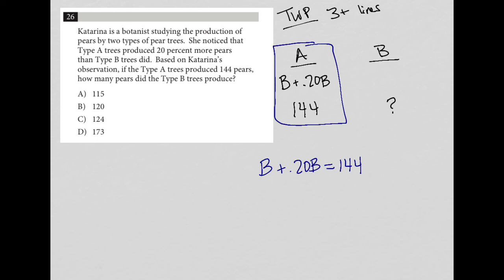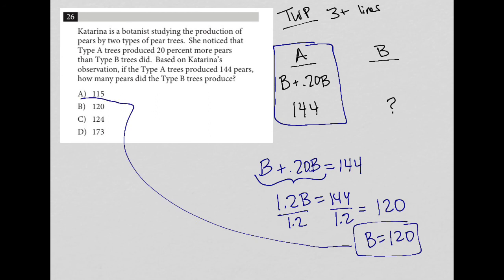So to solve this, I am going to simplify the equation. So B plus 0.2B is 1.2B equals 144. Divide both sides by 1.2. So 144 divided by 1.2 is equal to 120. So that tells me that B equals 120. And therefore, the correct answer here is choice B.